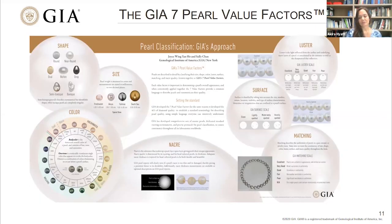Now I will take you through each of the GIA seven pearl value factors one by one. While some of the categories are more or less self-explanatory, others are more complicated. I will explain how general terminology such as color and matching applies to pearls specifically and how the GIA defines the various classification designations and specific terminology.